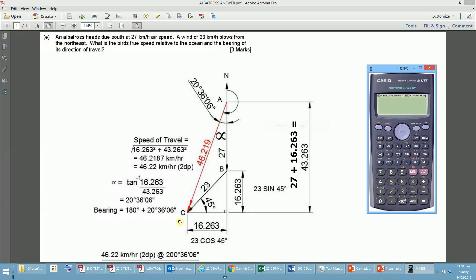we can see that that's 23 sin 45. And also the adjacent or the east-west component is 23 cos 45. And as we know, the 45 degree angle is a 1-1 sort of gradient, so the two components will be equal, and they're 16.263.